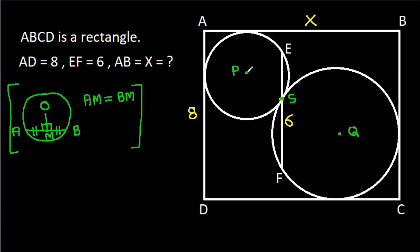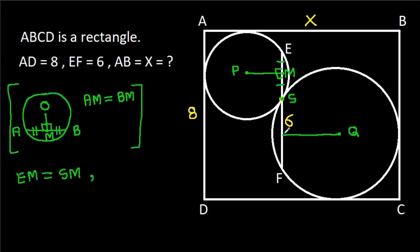So here, from point P, if we draw a perpendicular on ES — suppose this point is M — then EM will be equal to SM. And from point Q, if we draw a perpendicular on SF — suppose this point is N — then SN will be equal to FN.